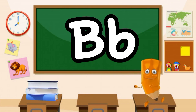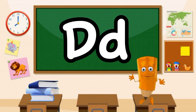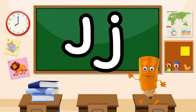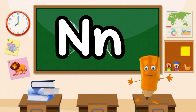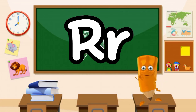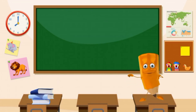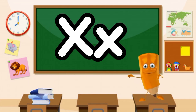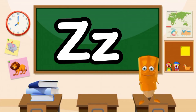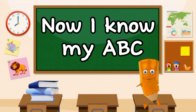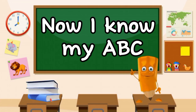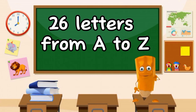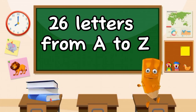A, B, C, D, E, F, G, H, I, J, K, L, M, N, O, P, Q, R, S, T, U, V, W, X, Y, and Z. Now I know my ABC, 26 letters from A to Z.